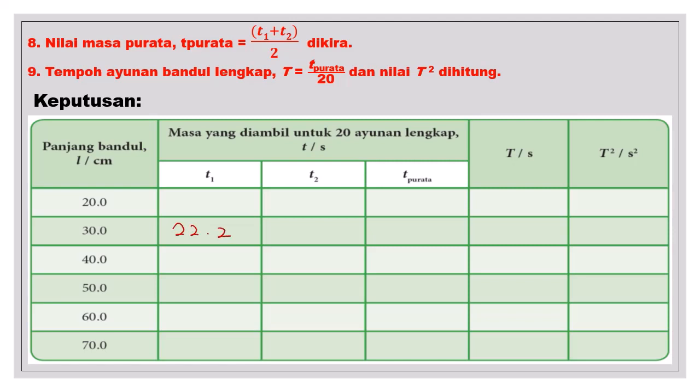Kemudian kali kedua, mengulangi eksperimen, dapat bacaan sebagai T2 iaitu 22.5. Ini sebagai contoh sahaja. Kemudian kamu menjalankan eksperimen, kamu catatkan bacaan kamu sendiri. Tetapi mengkirakan dengan menggunakan kaedah yang sama.